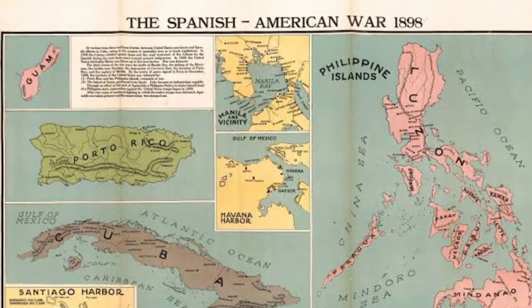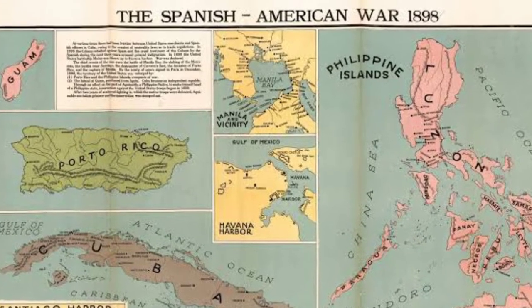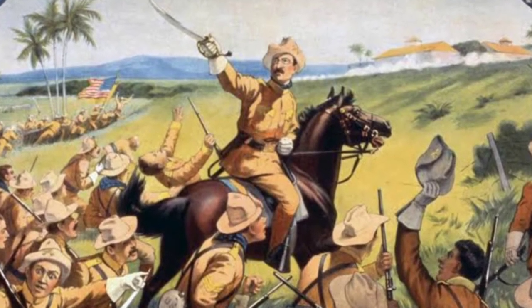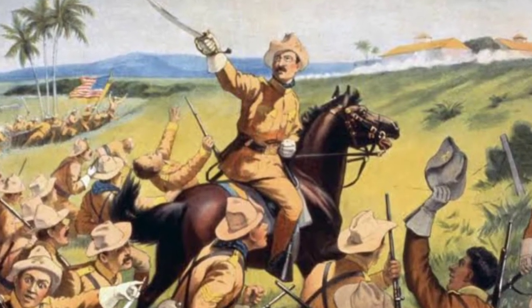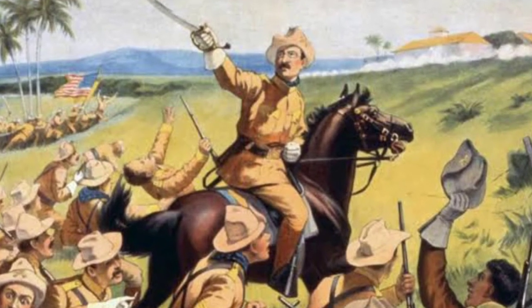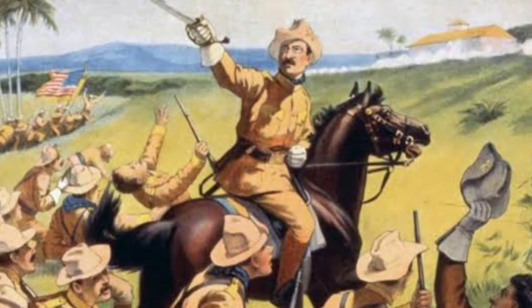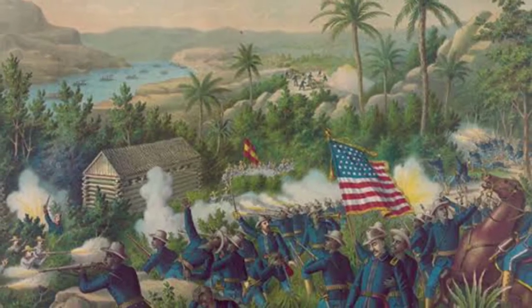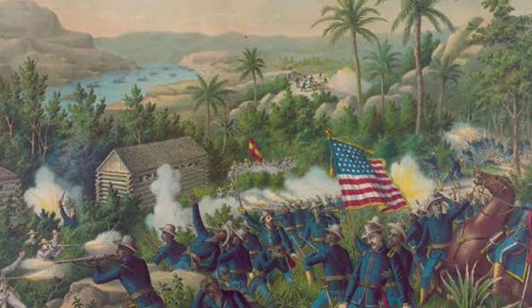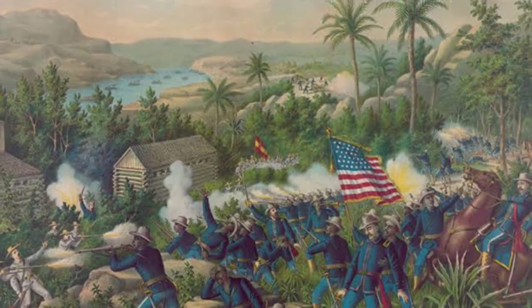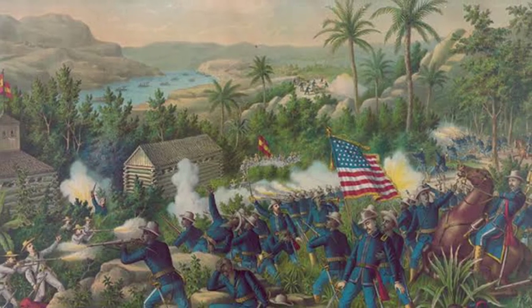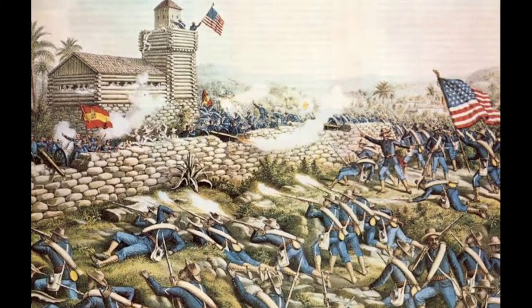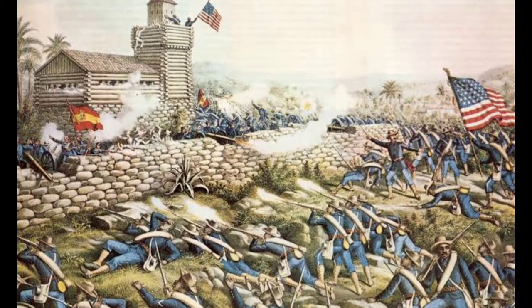Manila itself was occupied by U.S. troops by August. The elusive Spanish-Caribbean fleet under Admiral Pascual Cervera was located in Santiago Harbor in Cuba by U.S. reconnaissance. An army of regular troops and volunteers under General William Shafter, including then-former Assistant Secretary of the Navy Theodore Roosevelt and his 1st Volunteer Cavalry, the Rough Riders, landed on the coast east of Santiago and slowly advanced on the city in an effort to force Cervera's fleet out of the harbor.